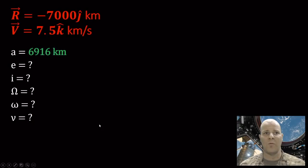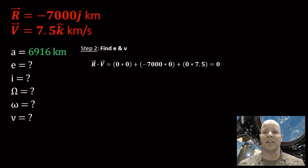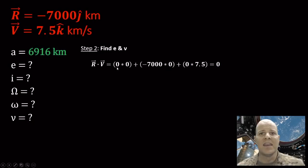One down, five to go. For eccentricity, we'll also get a bonus — true anomaly. We look at the dot product of our two vectors. If you recall, the dot product represents the projection of two vectors, and if it's zero, the vectors are perpendicular. Taking the dot product of negative 7000 J and 7.5 K, we get a scalar of zero — so our R and V vectors must be perpendicular.